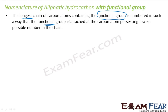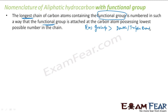So the priority will be: the lowest number should be given to the functional group first, then to the double or triple bond, and then to the alkyl group attached in the branch. This is the priority.